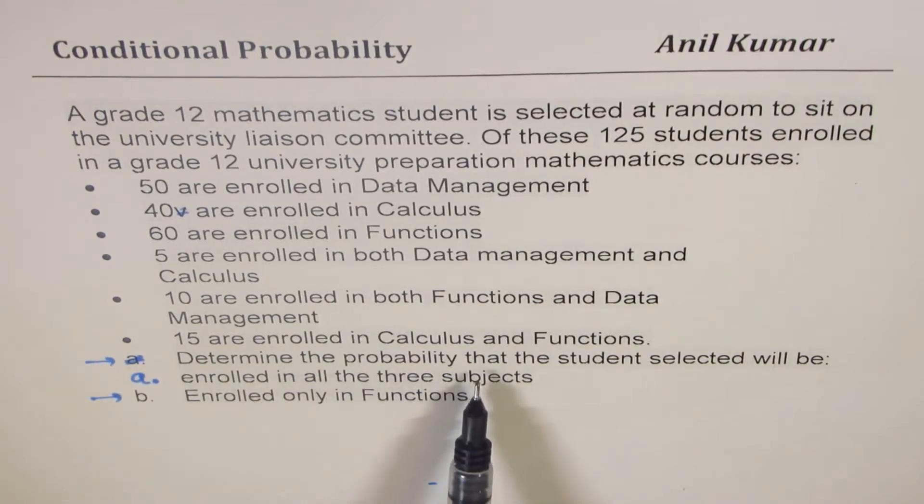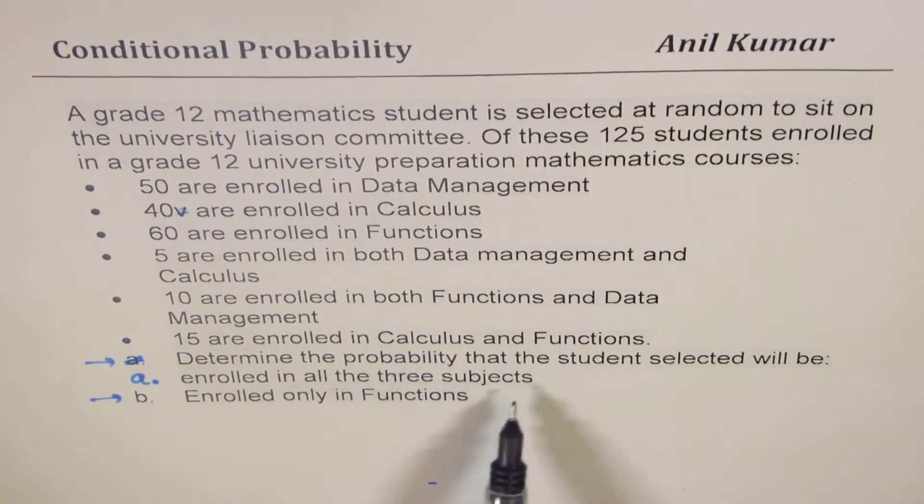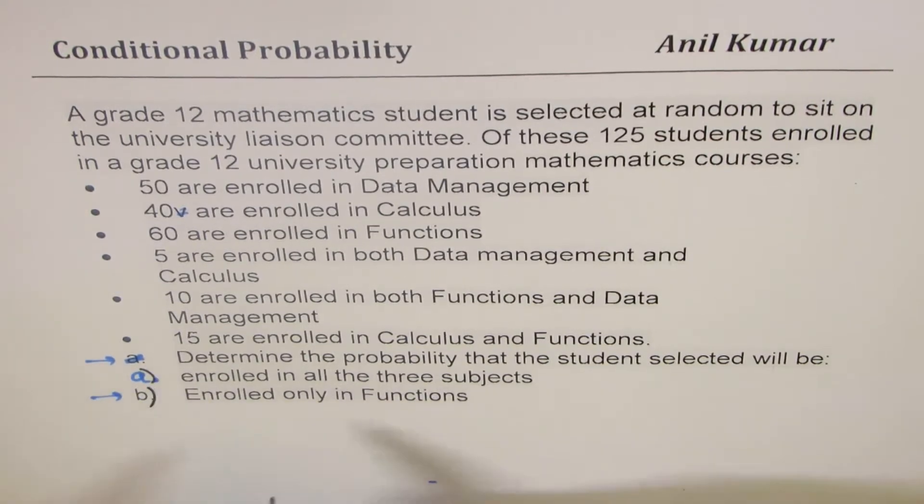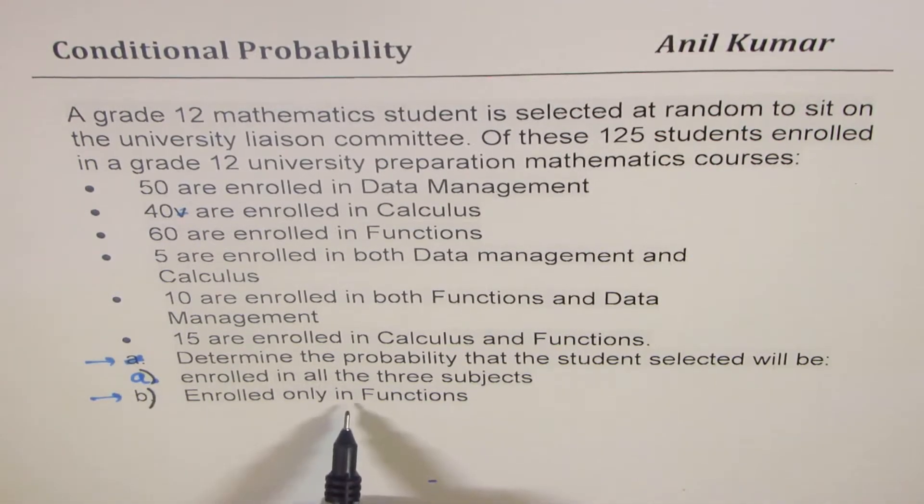You need to determine the probability that the student selected will be A) enrolled in all the three subjects, and part B) enrolled only in functions.